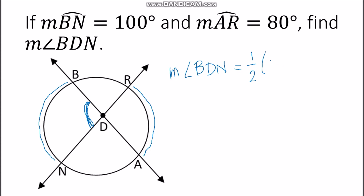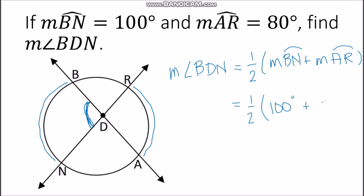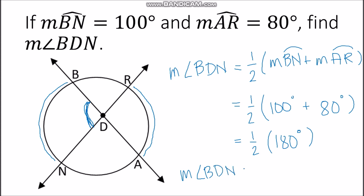We get half of the sum of the measurements: measurement of arc BDN plus measurement of arc AR. Substituting the values: 100 degrees plus 80 degrees equals 180 degrees, then take one-half of 180. The measurement of angle BDN is 90 degrees.